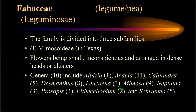Dividing the family into three subfamilies, the Mimosoideae is first. In general, Mimosoideae flowers are small, inconspicuous, and arranged in dense heads or clusters. In Texas, there are 10 genera in this subfamily: Albizia, Acacia, Calliandra, Desmanthus, Leucaena, Mimosa, Neptunia, Prosopis, Pithecellobium, and Schrankia. In recent taxonomic treatments, many members of the genus Schrankia have been moved into Mimosa.